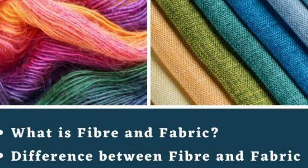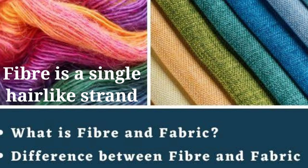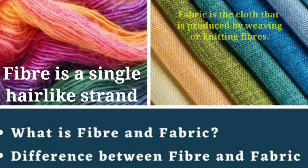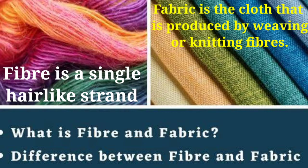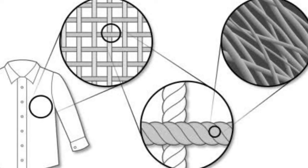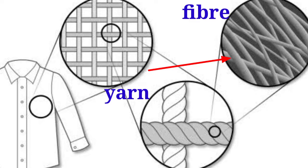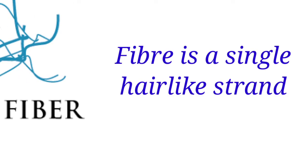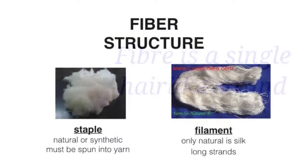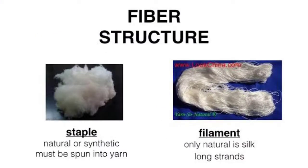Children, you have to understand the basic difference between fiber and fabric. Fiber is a single hair-like strand, whereas fabric is the cloth that is produced by weaving or knitting fibers. If you look closely at any fabric, you will see many yarns made of thinner strands known as fibers. So, fiber is a single hair-like strand.